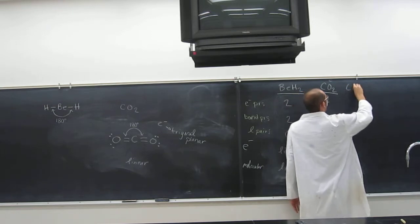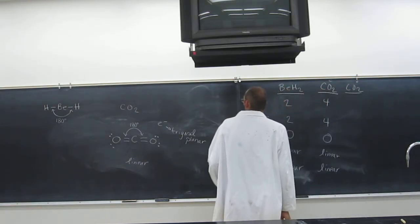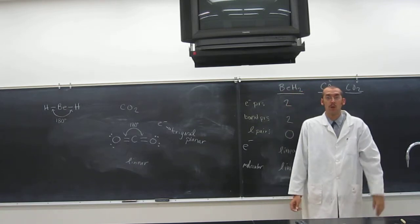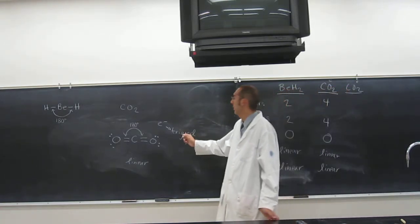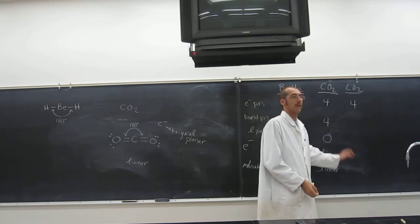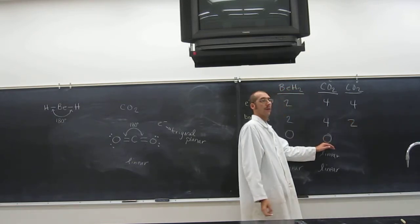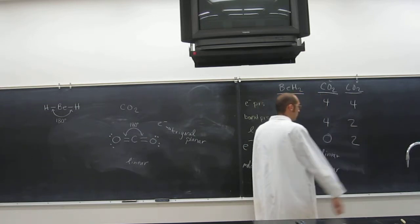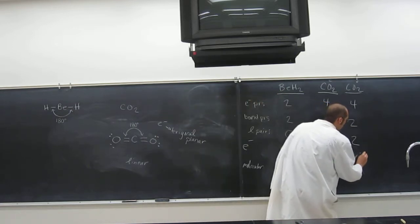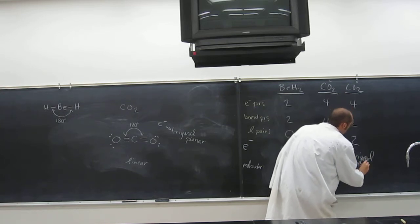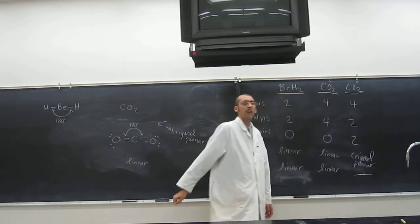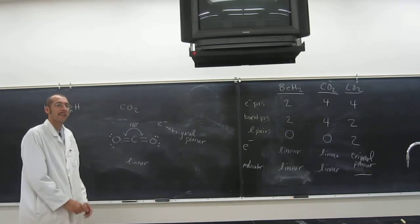Let's do the analysis for the oxygen in carbon dioxide. How many electron pairs are around that oxygen? Four — one, two, three, four. How many of those are bonding pairs? Two. How many are lone pairs? Two. What's the electronic geometry around that oxygen? Trigonal planar. And the molecular geometry? You can't do it because you've got to go angle to angle. Does that make sense?